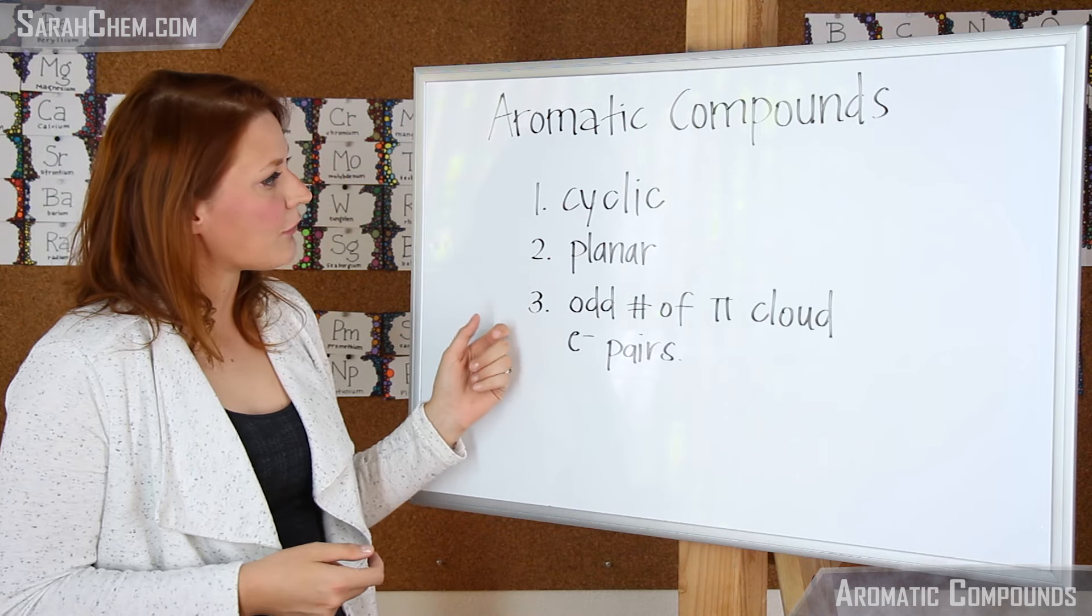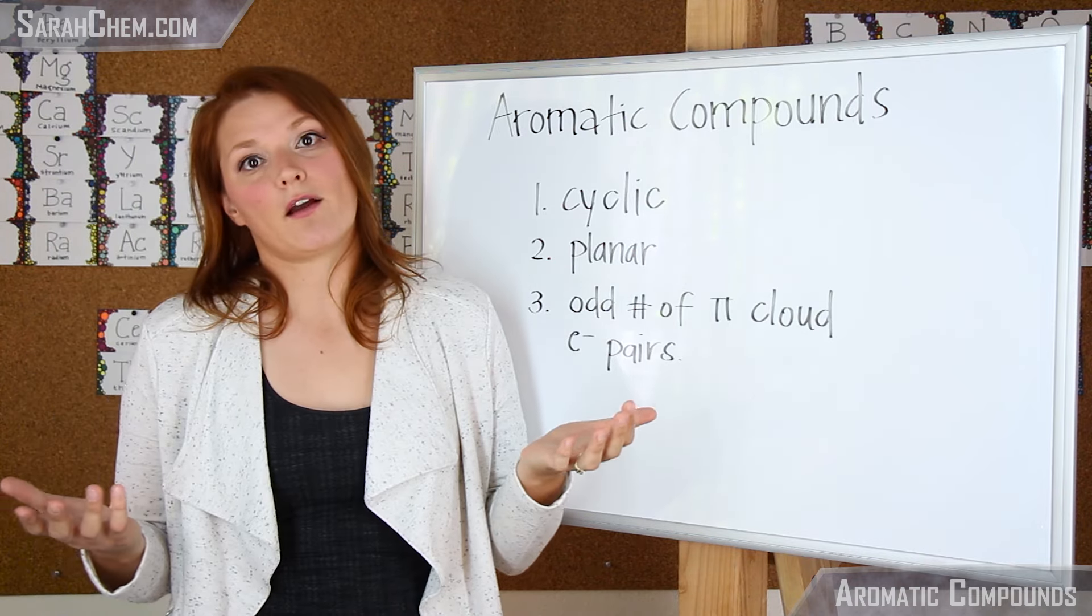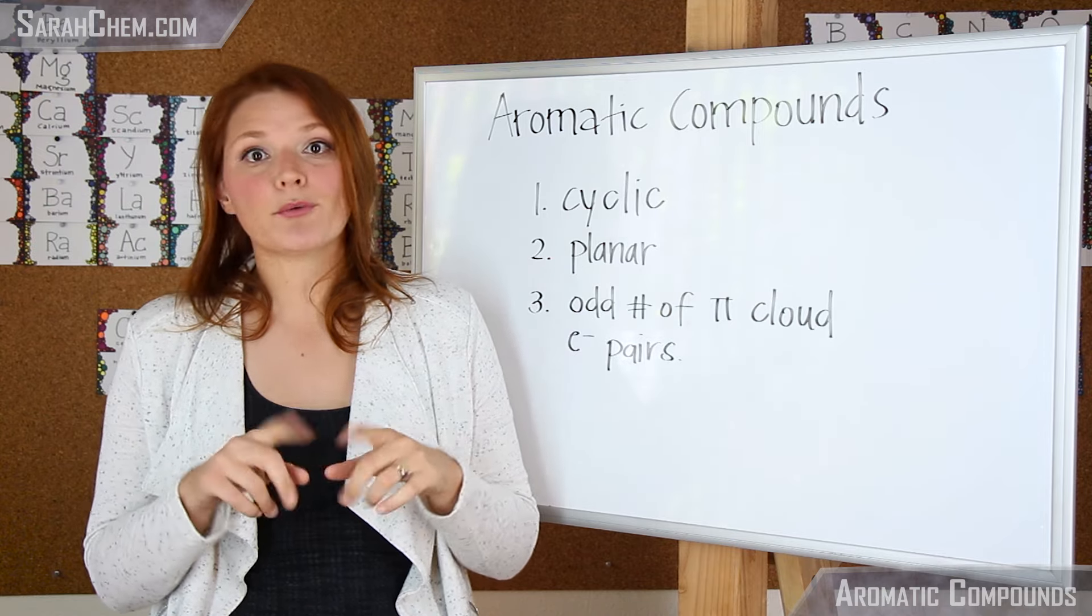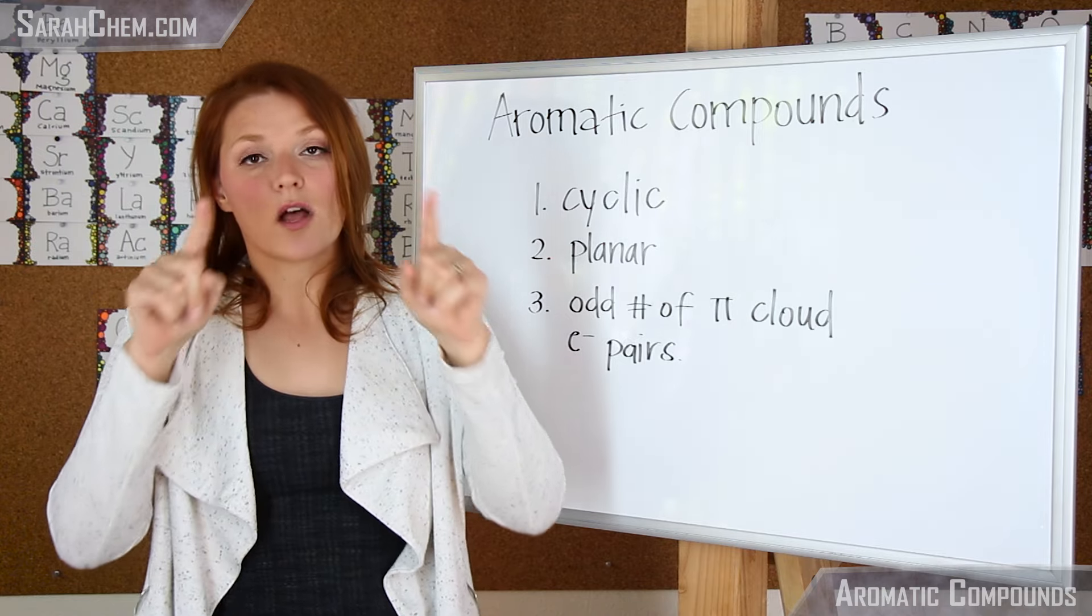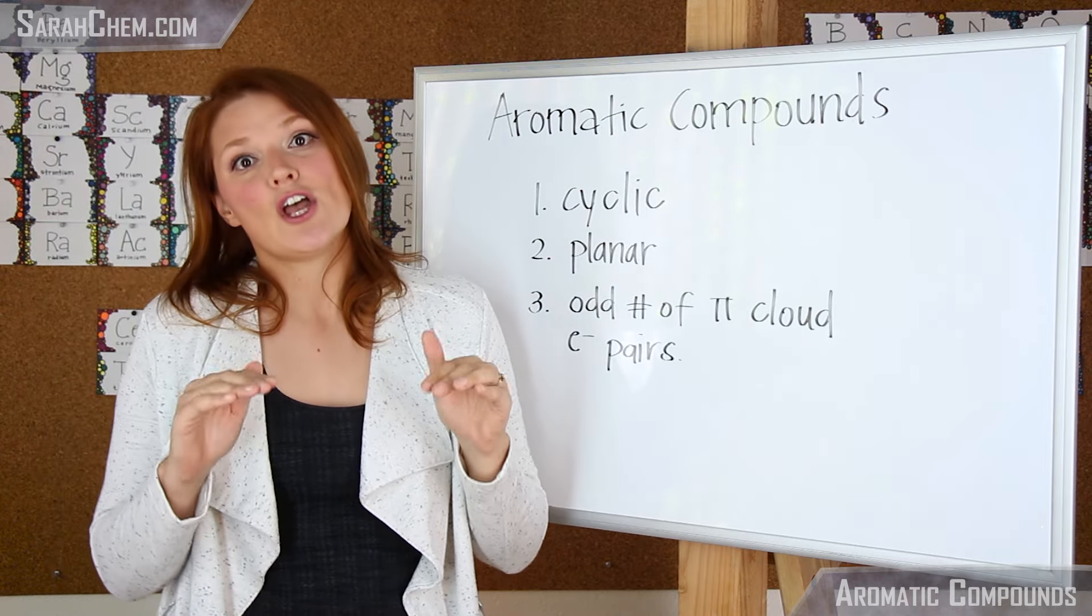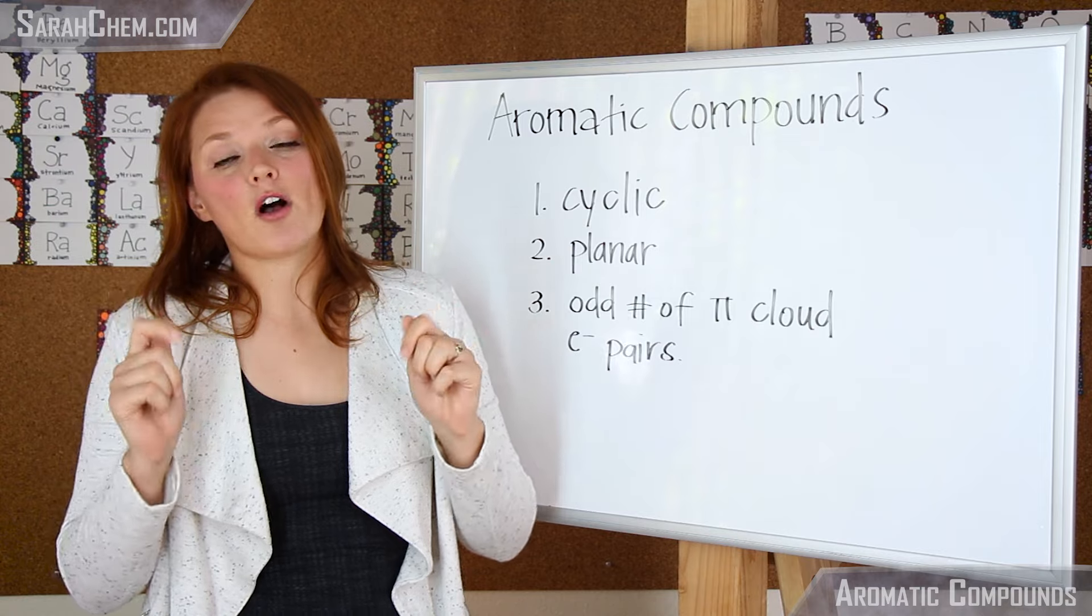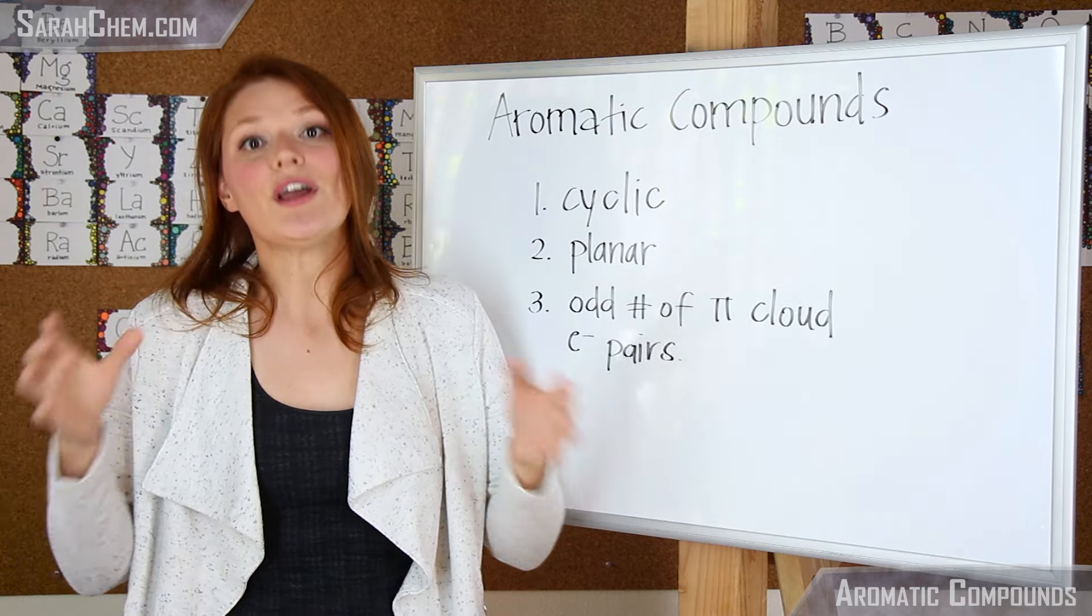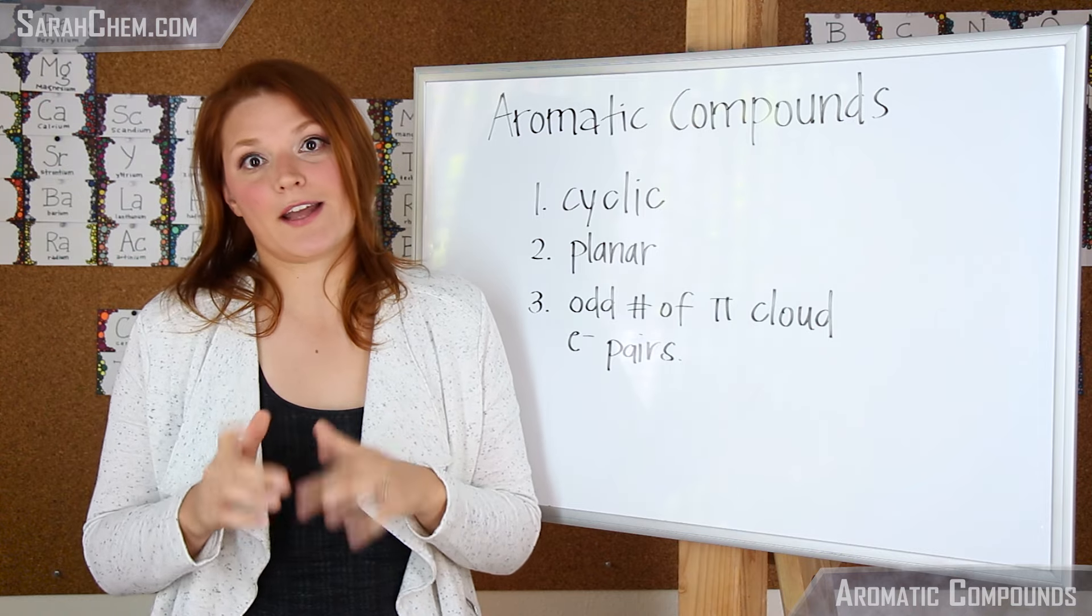If we take a look here, you'll see that we have three basic rules for an aromatic compound. The first one is it has to be cyclic—it could be a three-membered ring or a six-membered ring, but as long as it is a closed cycle. The second thing is it has to be planar. Any and all atoms involved in that cyclic component of your structure have to be sp2 hybridized.